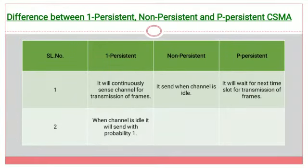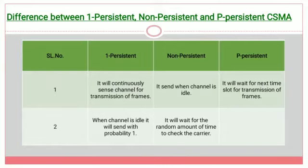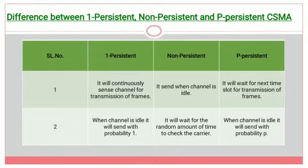In one persistent CSMA, when the channel is idle it will start transmitting the packet with a probability of 1. In non persistent CSMA, it will wait for a random amount of time to check the carrier. In p persistent CSMA, when the channel is idle, it will send a packet with a probability of p.